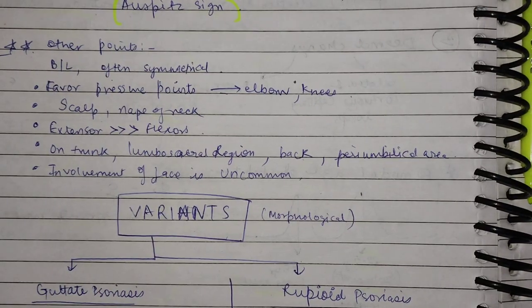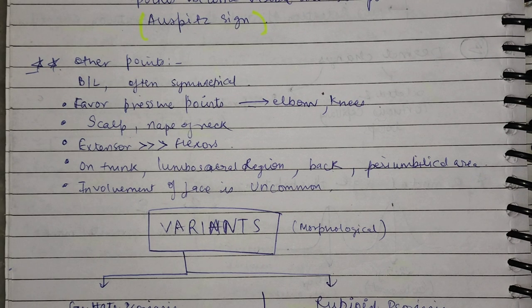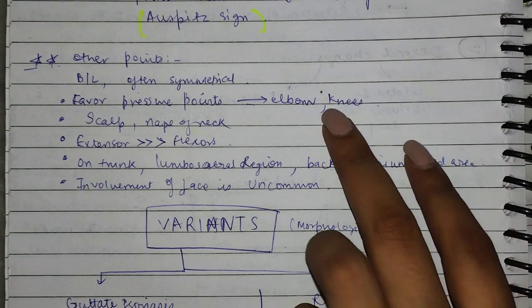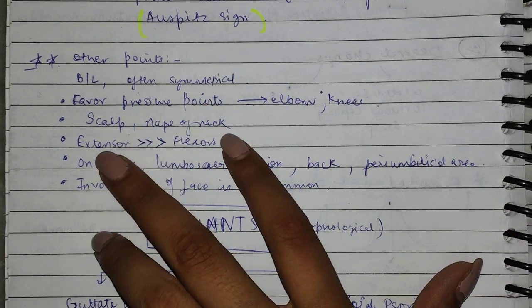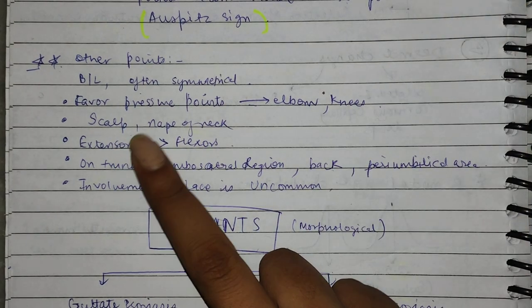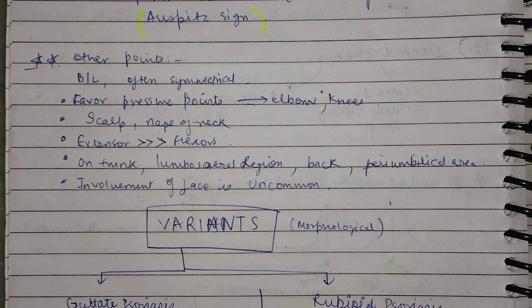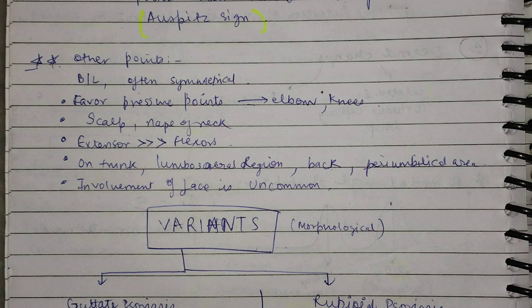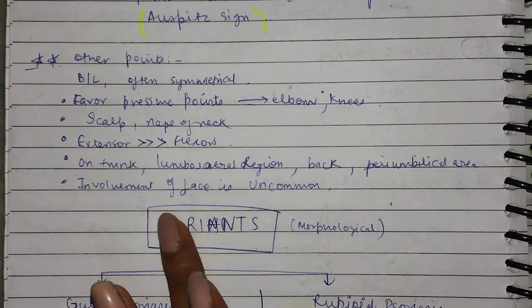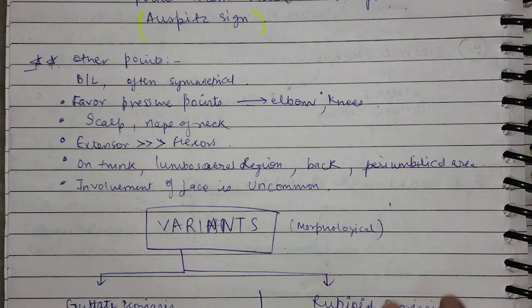The main points to remember: psoriasis is bilateral and will often be symmetrical — it will be in both hands, bilateral presentation. Pressure points are favourable locations, like elbows and knees. You can also find it on the scalp and nape of neck. Extensors are more favourable than flexors — you commonly find psoriasis on extensors. Also, the lumbosacral region, back, and peri-umbilical area are common sites.